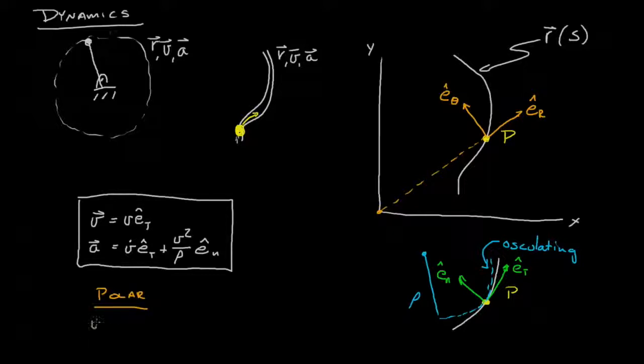In that case our velocity was equal to r theta dot e_theta, so that r theta dot, that's going to be the indication of the tangential velocity in the e_theta direction, that's very similar to the e_t direction, the tangential direction.